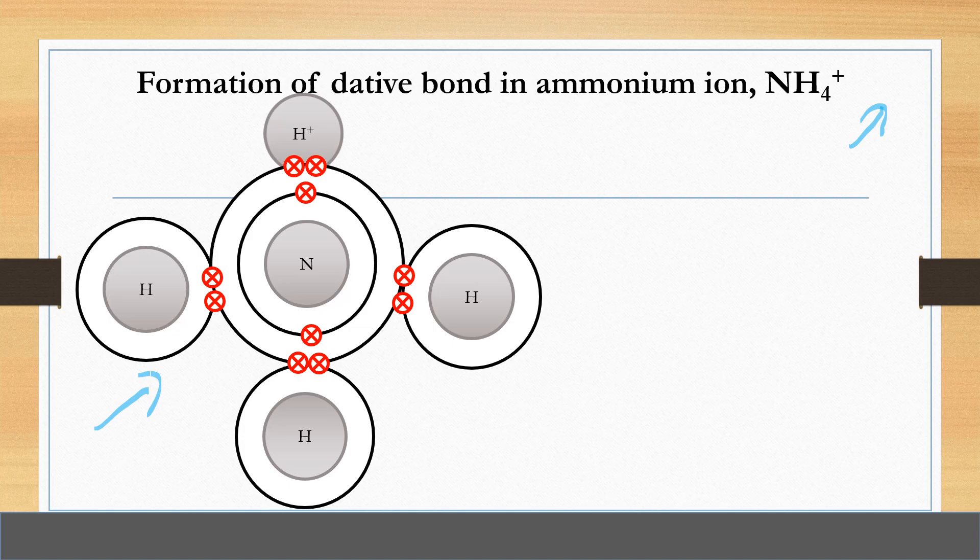So this one is called ammonium ion, which achieves stable octet electron arrangement for all the atoms, for hydrogen ion, hydrogen atoms, and one nitrogen atom.